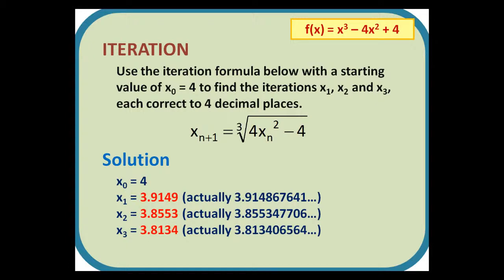x0 equals 4 is stored as our first answer. Typing in the formula and pressing equals, we get x1 is equal to 3.9149. Pressing equals again, we get x2 as 3.8553, and again, and we get x3 as 3.8134.